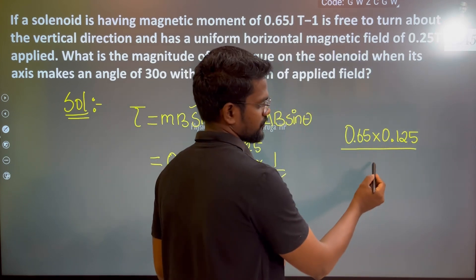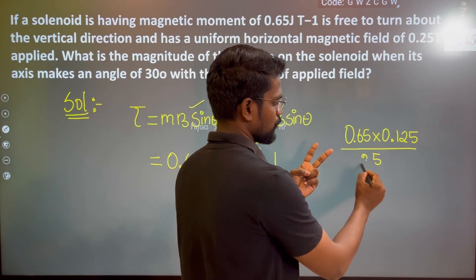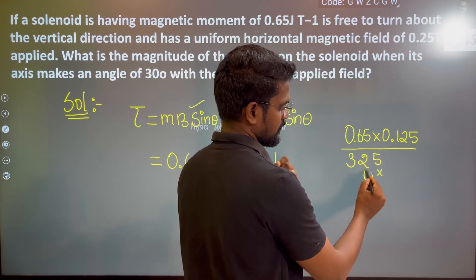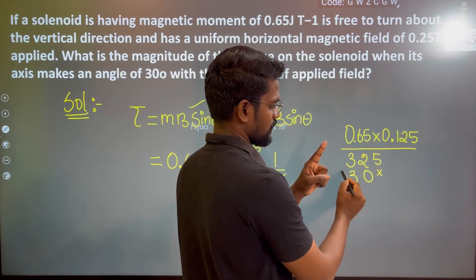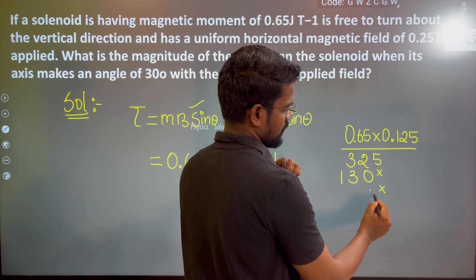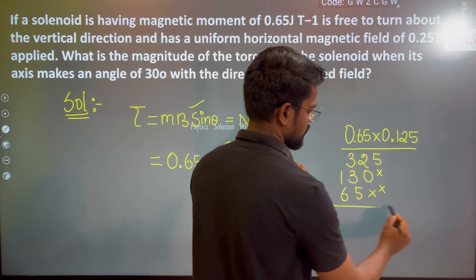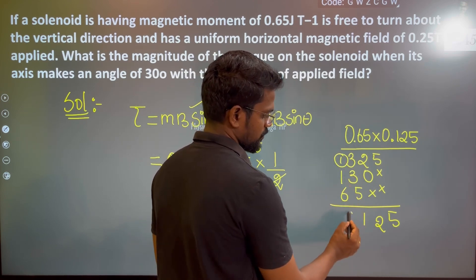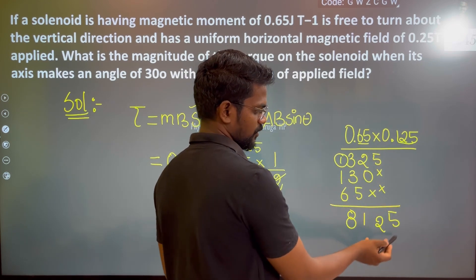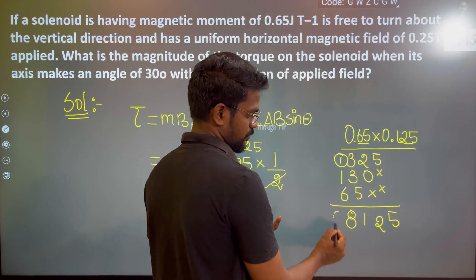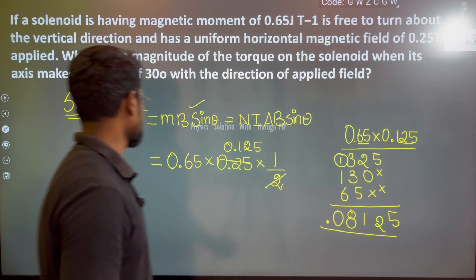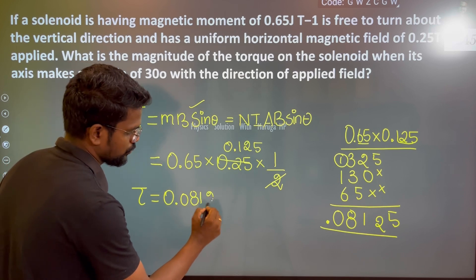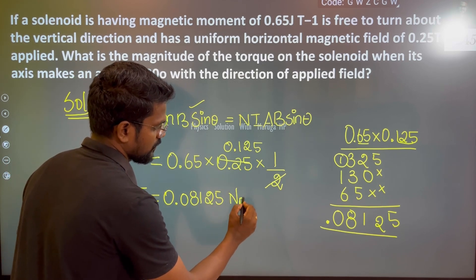So computing 0.65 multiplied by 0.125: carrying through the arithmetic, we get the torque equal to 0.08125 newton meter.